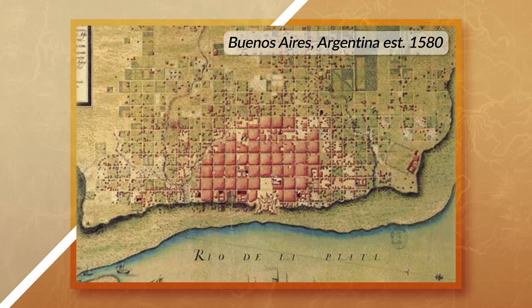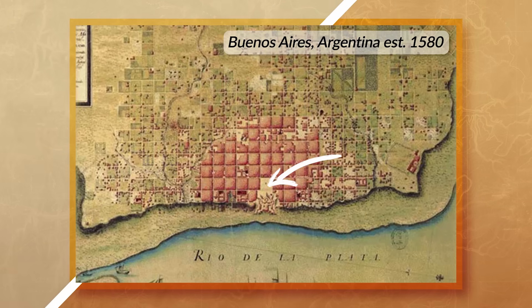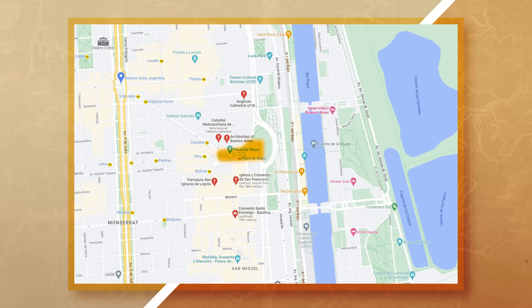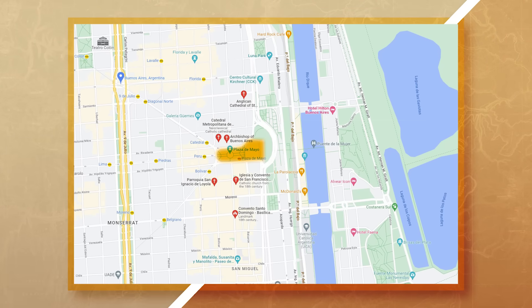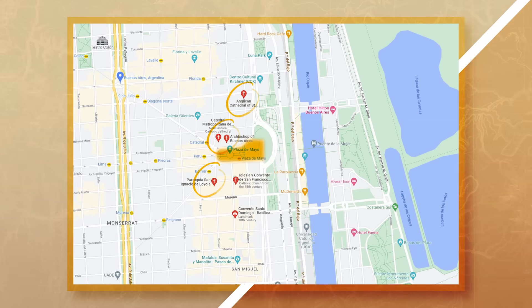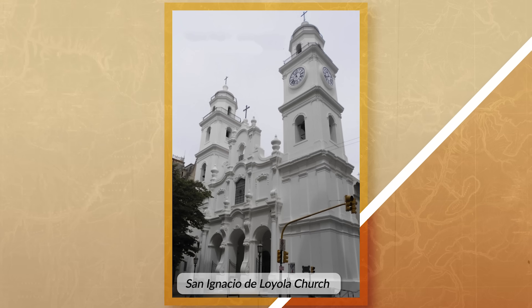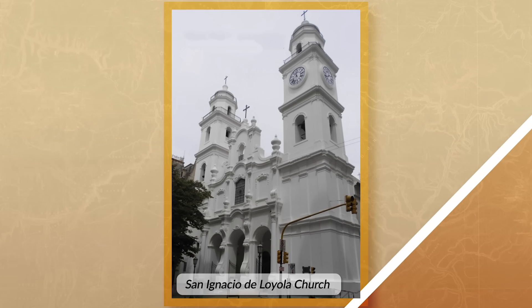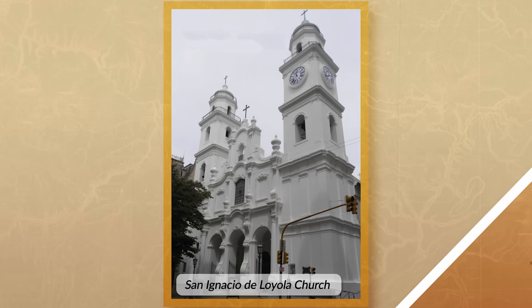Even today, we can see the impact of colonization on cities around Latin America. For example, when looking at the capital of Argentina, we can still see the spatial layout of a plaza in the city, with religious buildings located not far away. In fact, some of the churches near the plaza date all the way back to 1686 and are some of the oldest churches in Buenos Aires. So we can see that historical events such as European colonization had a profound impact on the creation of cities across Latin America.